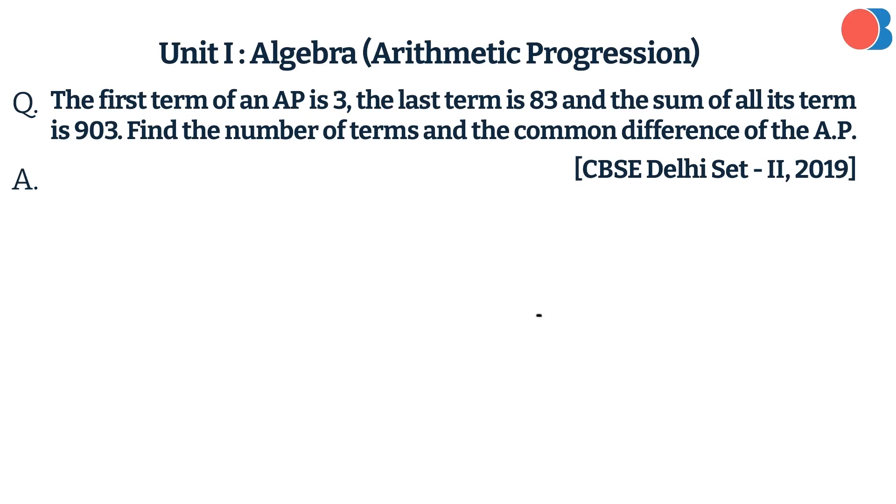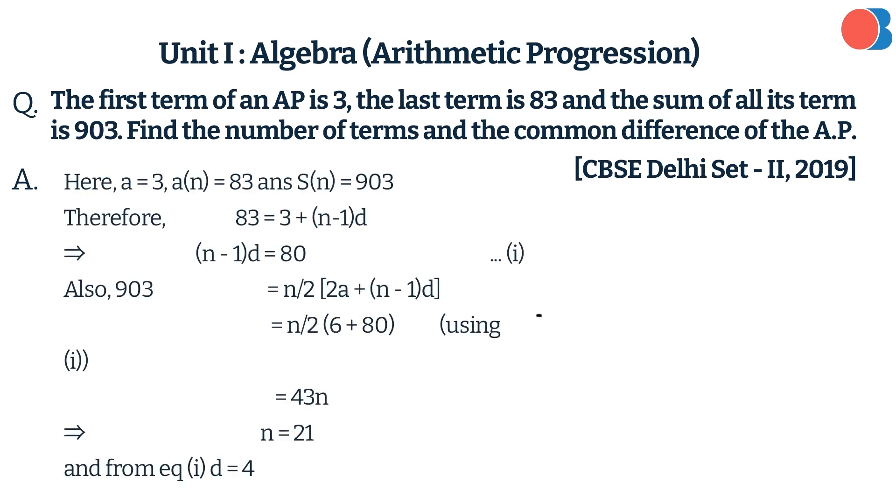The first term of an AP is 3, the last term is 83, and the sum of all its terms is 903. Find the number of terms and the common difference of the AP. Here is the answer.